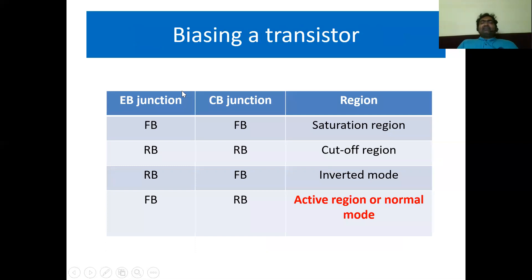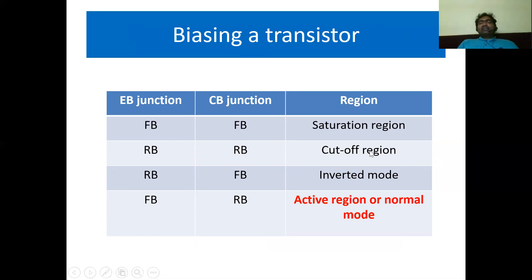Let us see the different biasing conditions of transistors. If the emitter-base junction and collector-base junction are both forward biased, then the transistor is said to be in the saturation region. If the emitter-base junction and collector-base junction are both reverse biased, then the transistor is said to be in the cutoff region.